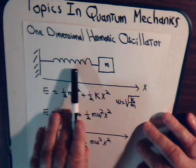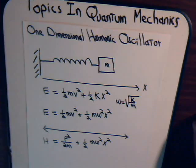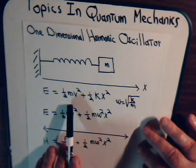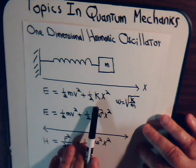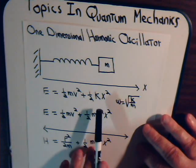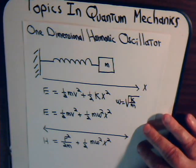and it's oscillating back and forth along the x-axis, the total energy that's associated with the system is kinetic energy plus the potential energy. K is the spring constant of the system.